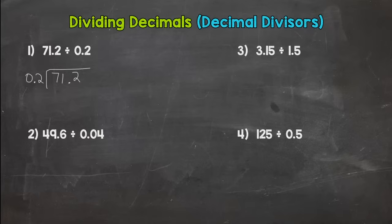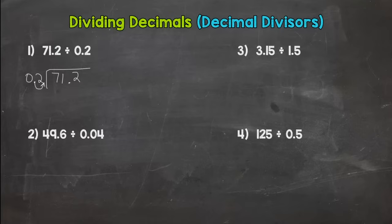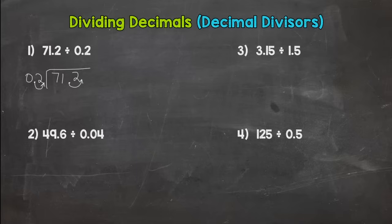What we do is make our divisor whole by moving the decimal, which is the same as multiplying by a power of ten. Moving the decimal once is like multiplying by ten, twice by a hundred, three times by a thousand, four times by ten thousand, and so on. For number one we move the decimal once, which is like multiplying by ten. Now whatever you do to the outside — the divisor — you have to do to the inside, the dividend. So I move my decimal once and draw those arrows out to show my movements.